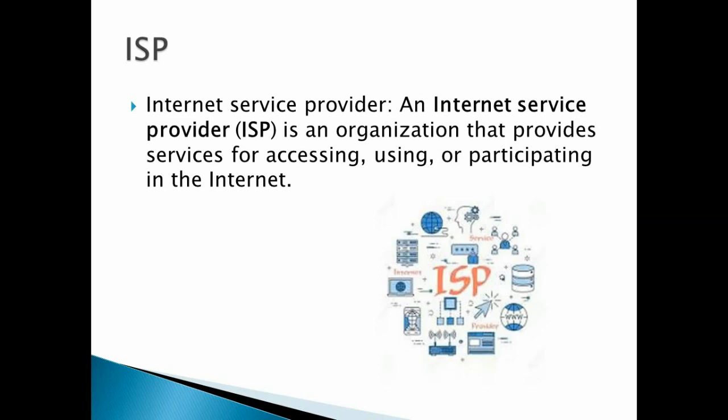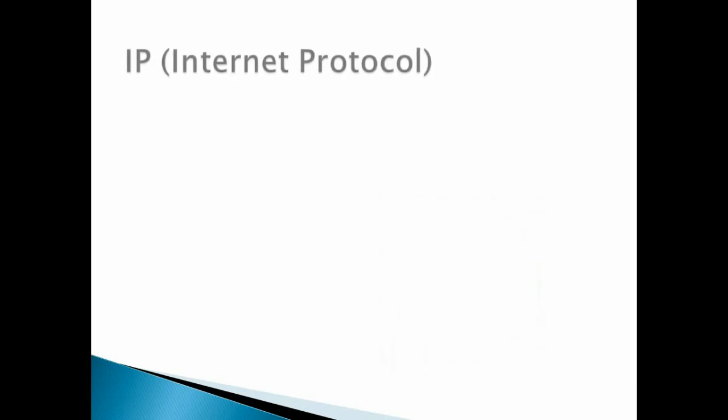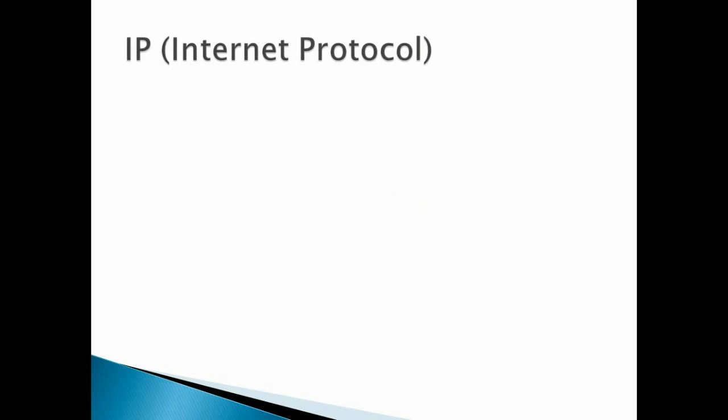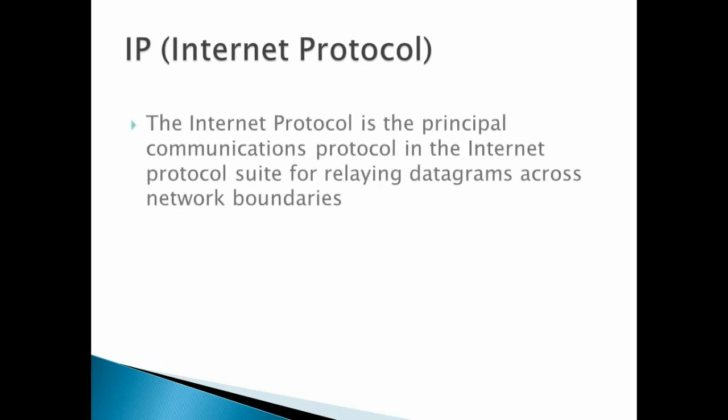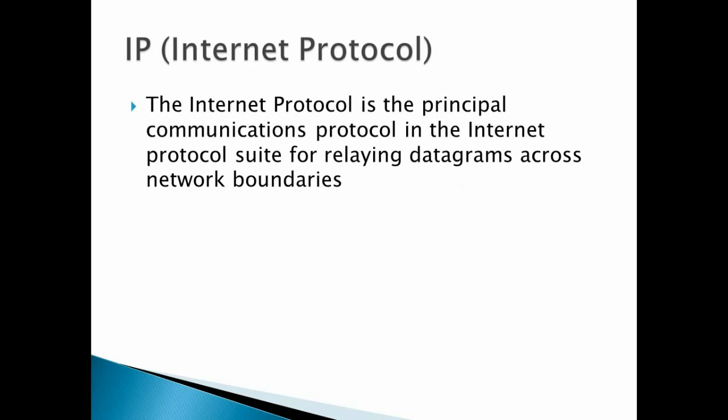Next is IP, that is Internet Protocol. A protocol means it is a set of rules which computers use to communicate with each other. When two computers interact with each other, they are using some rules, and these rules are known as Internet Protocol. By definition, the Internet Protocol is the principal communication protocol in the internet — the internet protocol suite for relaying datagrams across network boundaries.